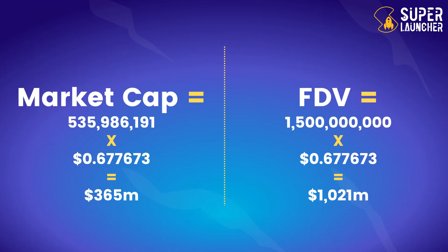The FDV is calculated by multiplying the maximum supply — 1,500 million tokens — times the price, which gives an FDV of around 1,021 million dollars. Bear in mind this is always changing because the price changes, and over time the circulating supply will also increase.